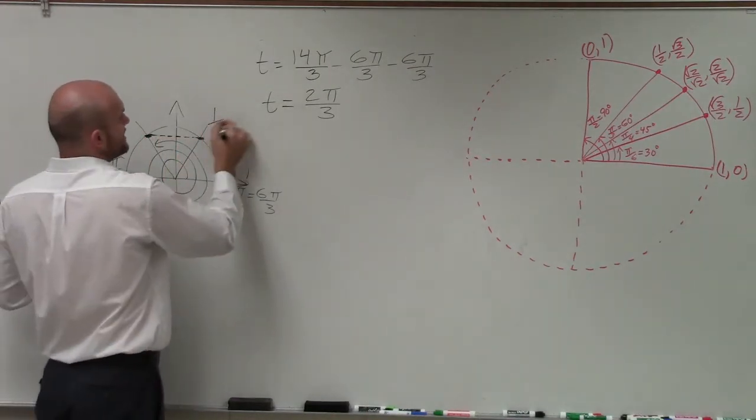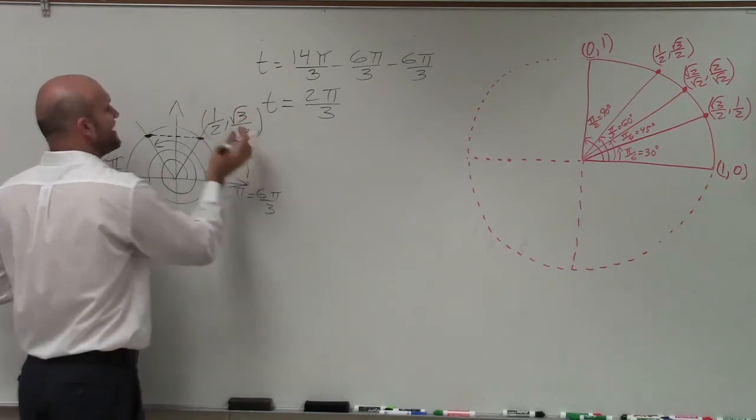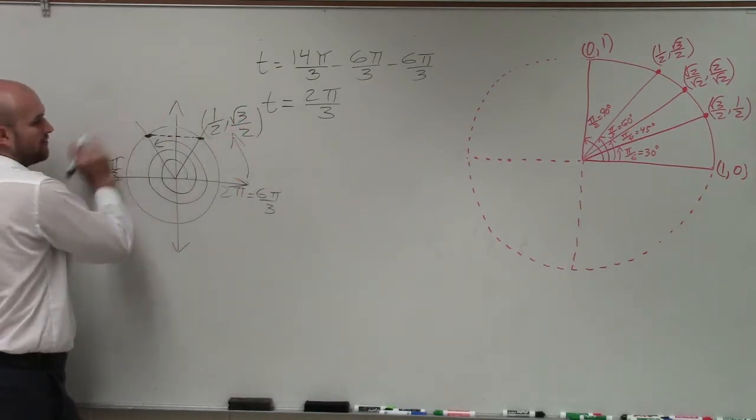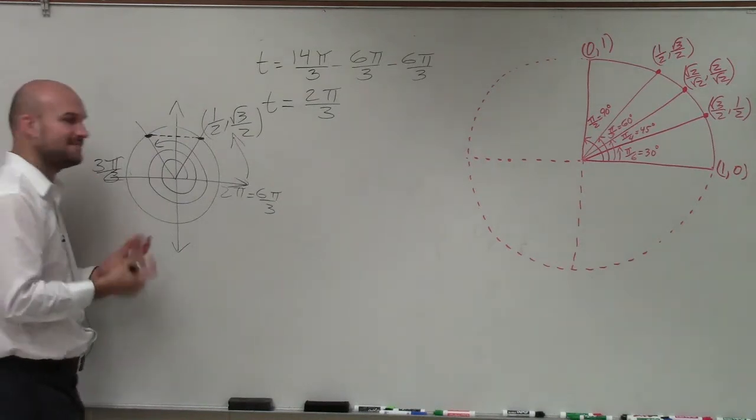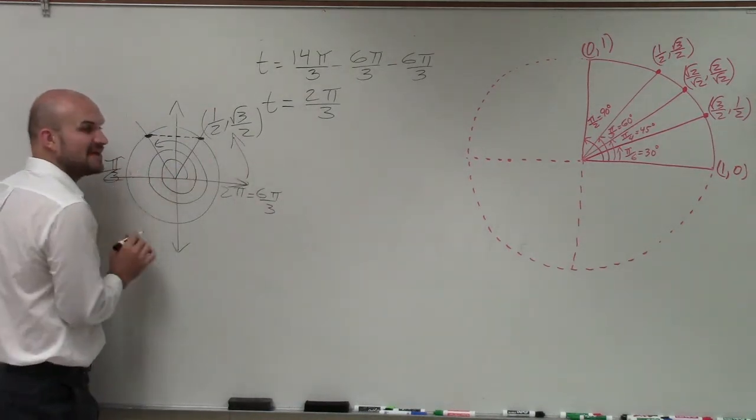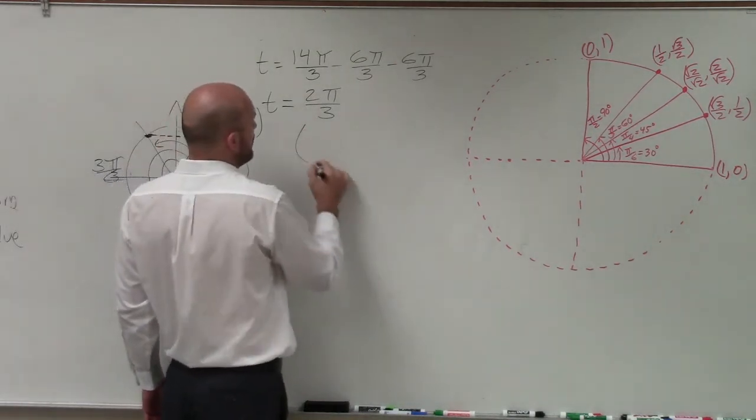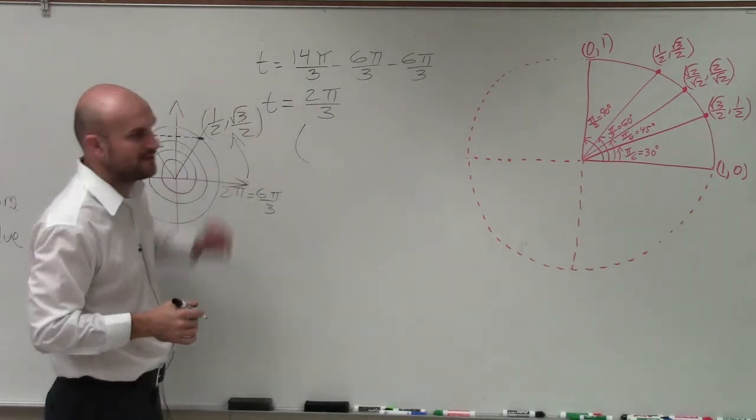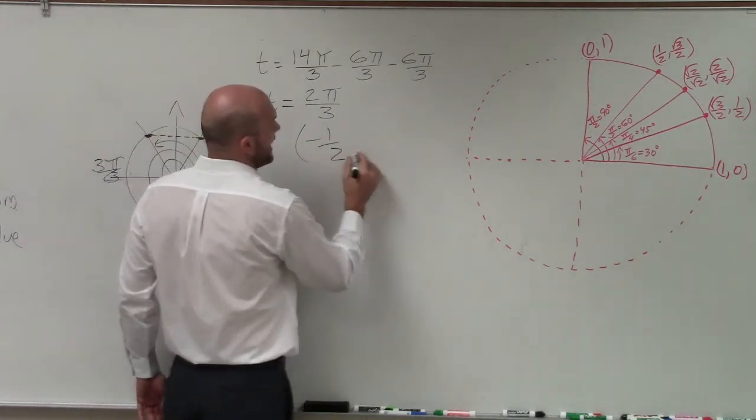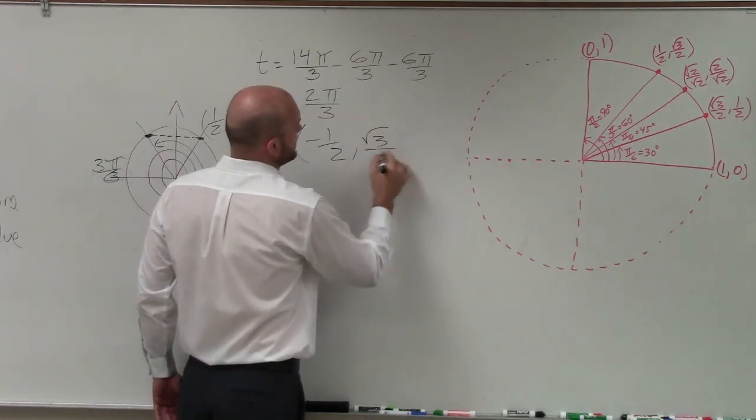Now, that point is 1/2 comma √3 over 2. So if I take this point and reflect it over the x-axis, what is going to be different? Well, now my x value is going to be negative. So the point at t equals 2π over 3, or 14π over 3, is going to be negative 1/2 comma √3 over 2.